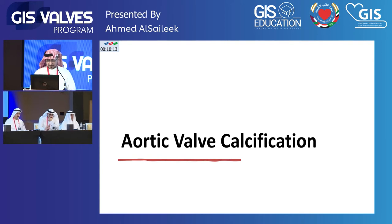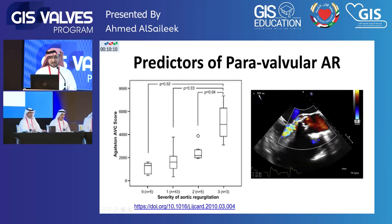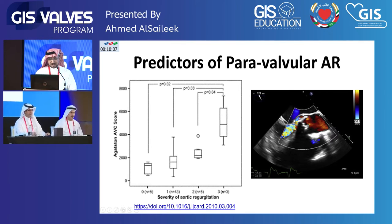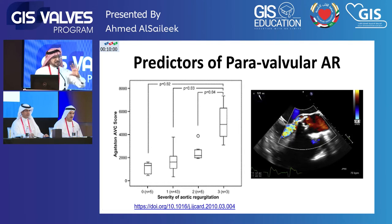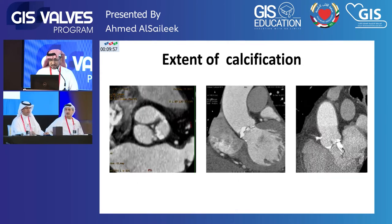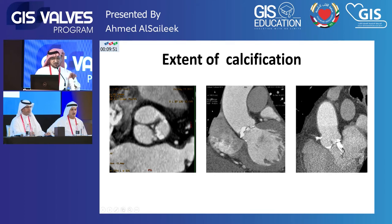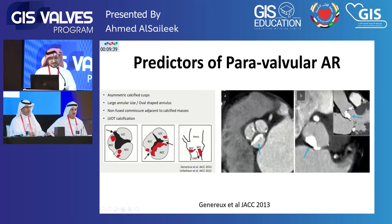Regarding aortic valve calcification: patients with more than 3,000 Agatston units of calcium have a huge increase in the risk of paravalvular leak. We need some calcium, but too much is important. More importantly, where is the calcium? Is it distributed evenly over the cusps, or is it going into the LVOT? Asymmetric calcification or calcification extending into the LVOT will increase the risk of paravalvular leak and conduction abnormality.